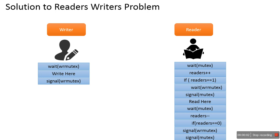In this video I will explain the solution of the Readers-Writer problem, which is one of the classical synchronization problems. In this problem there is a single file with multiple writers and multiple readers. The problem states how to provide a solution which allows multiple readers to read the file, but when it comes to writing, only a single writer can access the file.